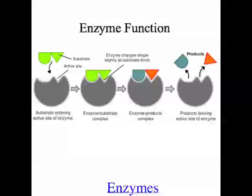Enzymes have some really important properties. Importantly, they're not changed and they're not used up in a reaction. All they do is help a reaction take place. One enzyme can help one reaction take place, and then when that reaction is done, they can go and help the same reaction take place again — over and over. So one enzyme can help the same specific chemical reaction take place over and over, making reactions happen far faster in the body.